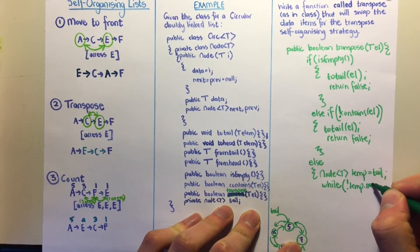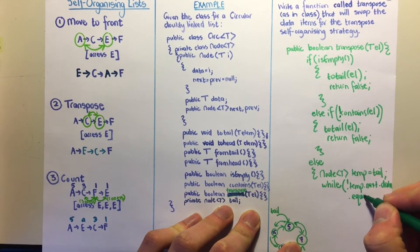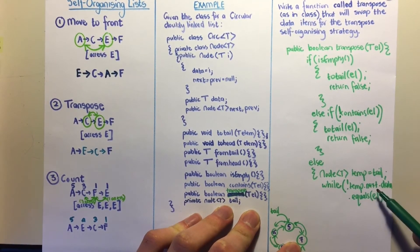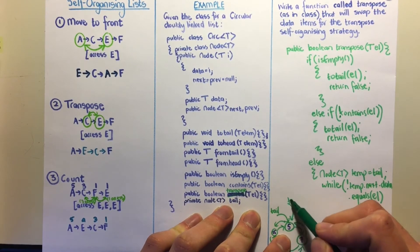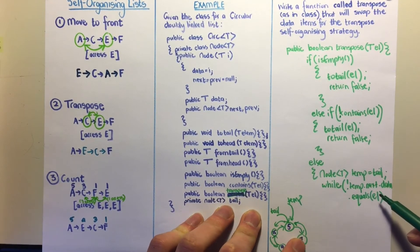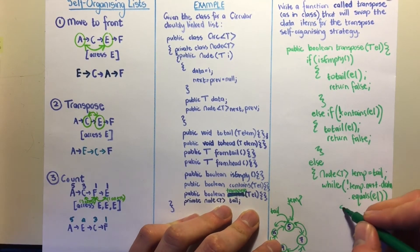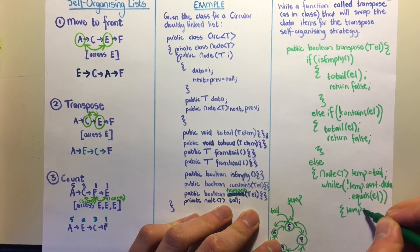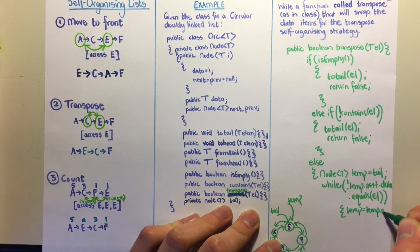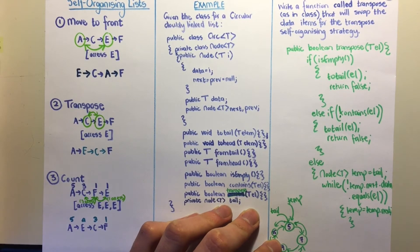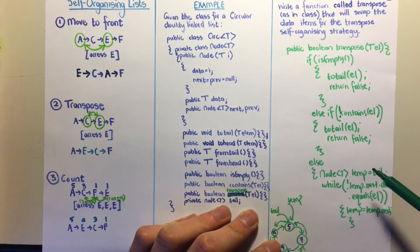Inside the while loop, while temp.next.data does not equal el, we advance temp to temp.next. Once the loop exits, we know temp.next.data is the element we want, and temp is its predecessor, since we confirmed the element exists in the list.